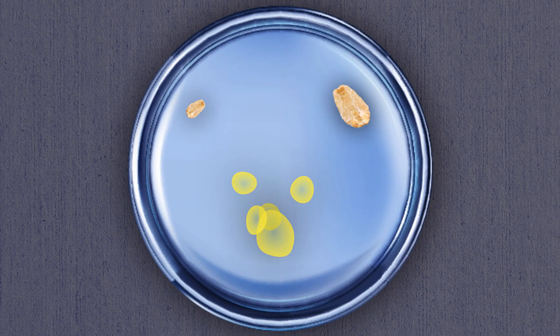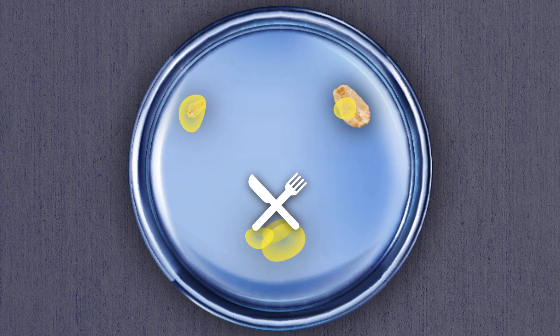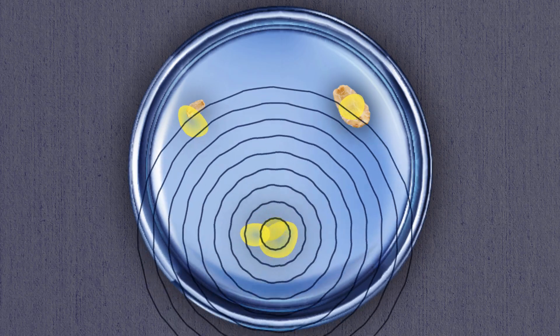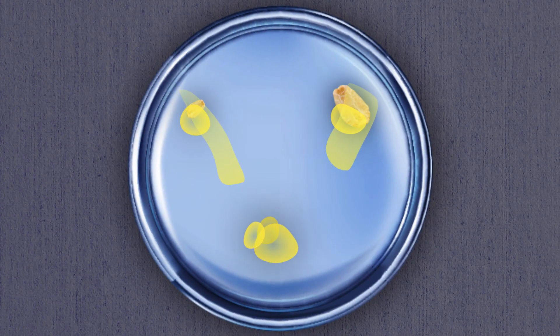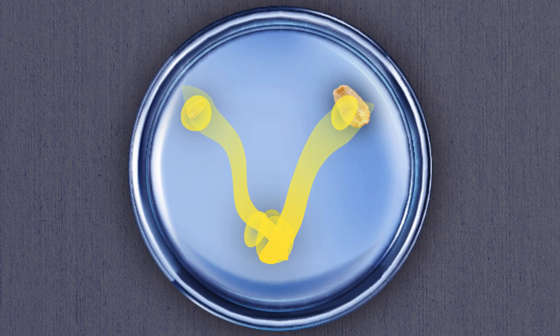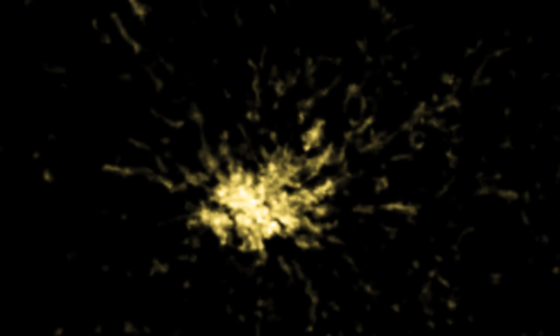These organisms are able to function alone, but when a lonely cell begins to starve from a lack of food source, it sends out a distress signal. A chemical cry for help, and other nearby slime mold cells will answer the call by coming and fusing with it, dissolving their cell membranes and melding together.